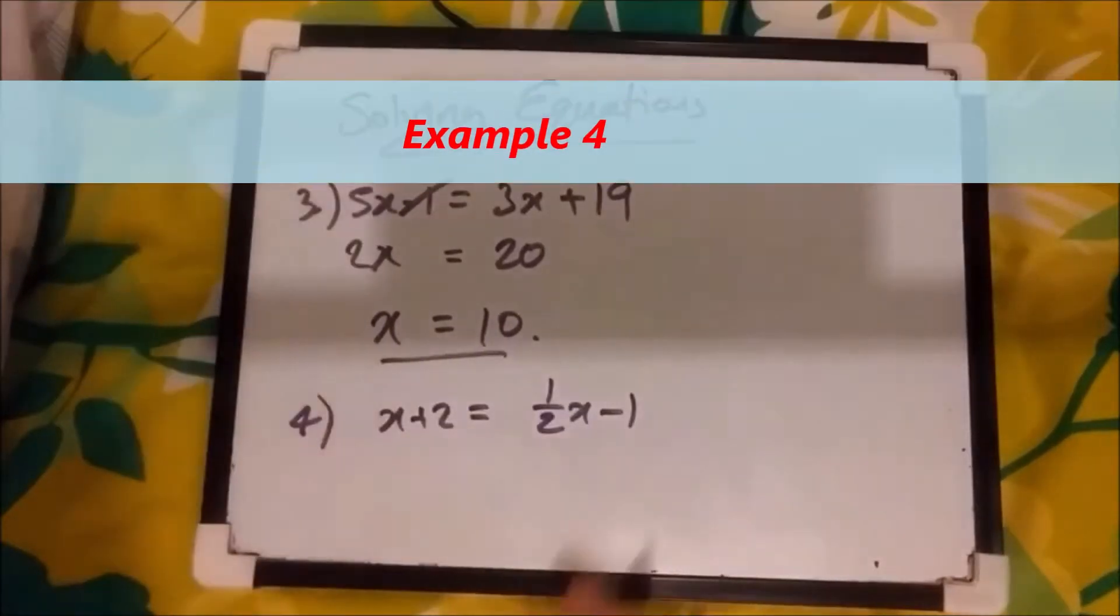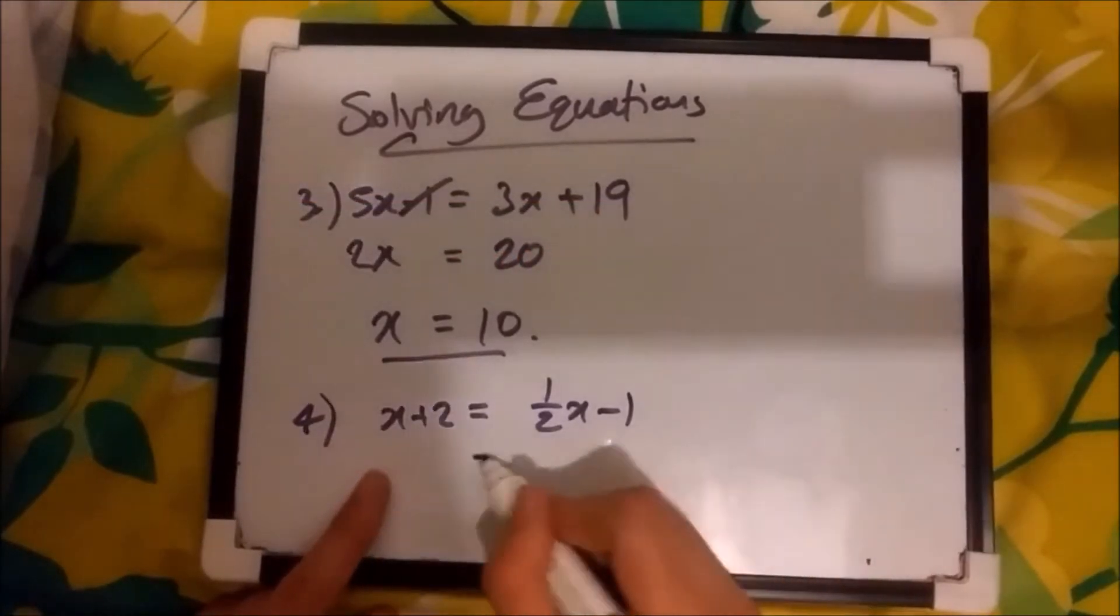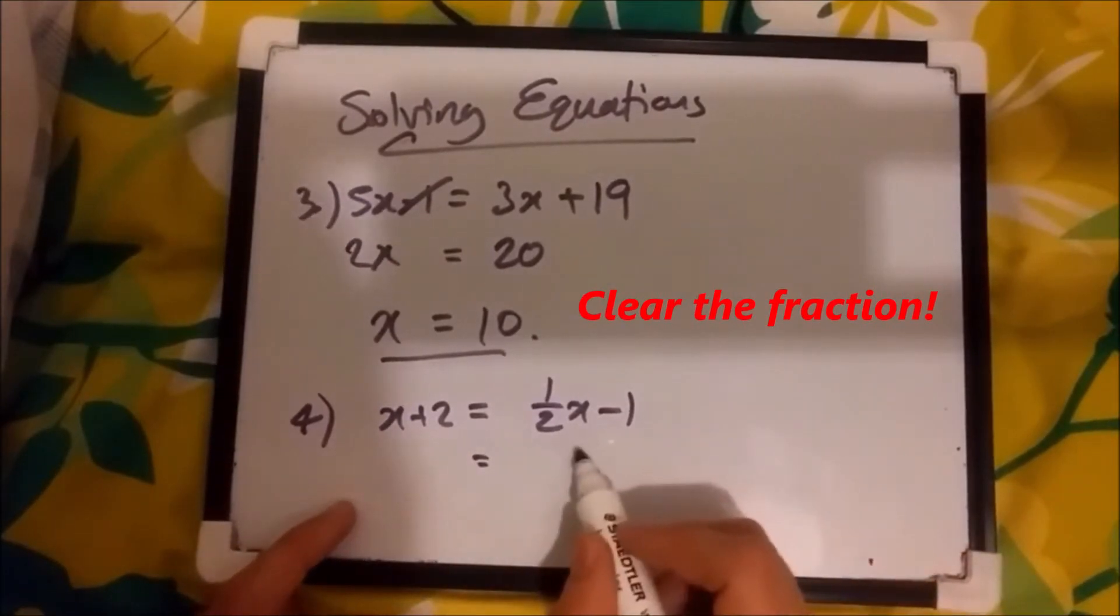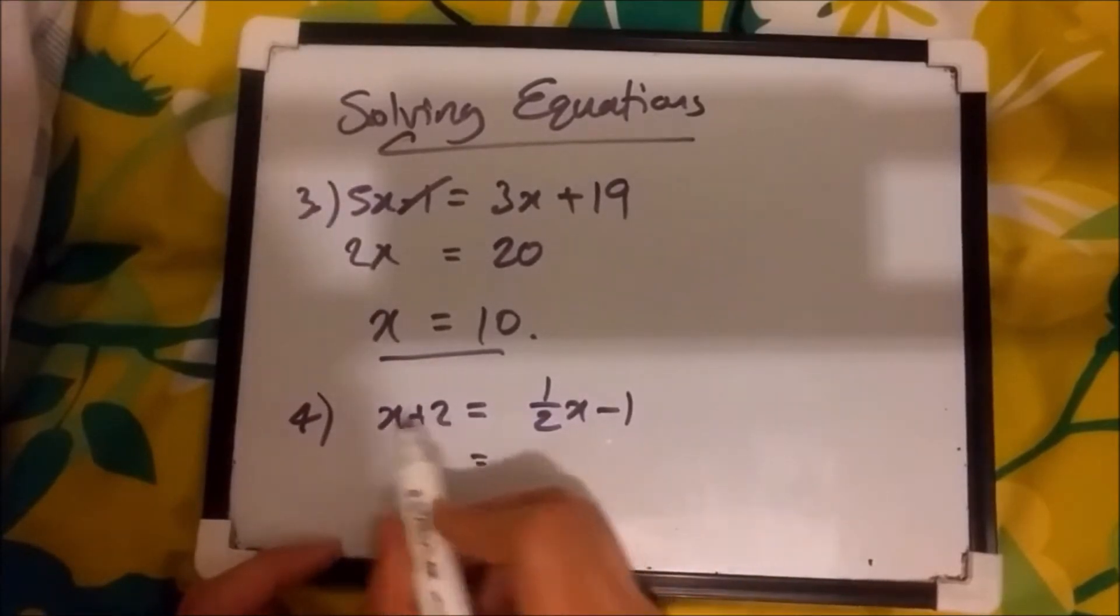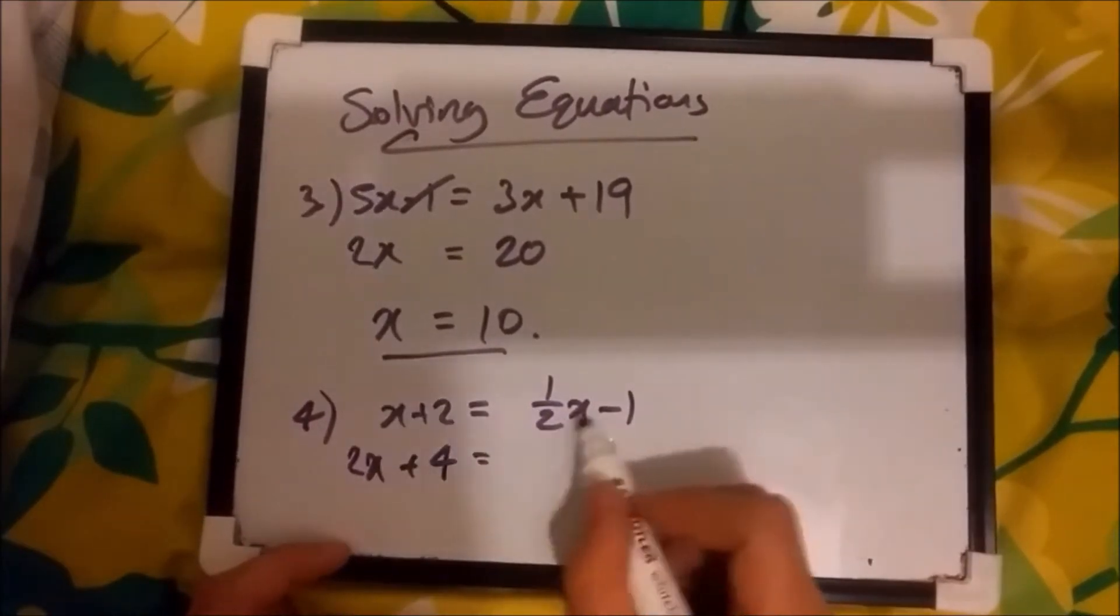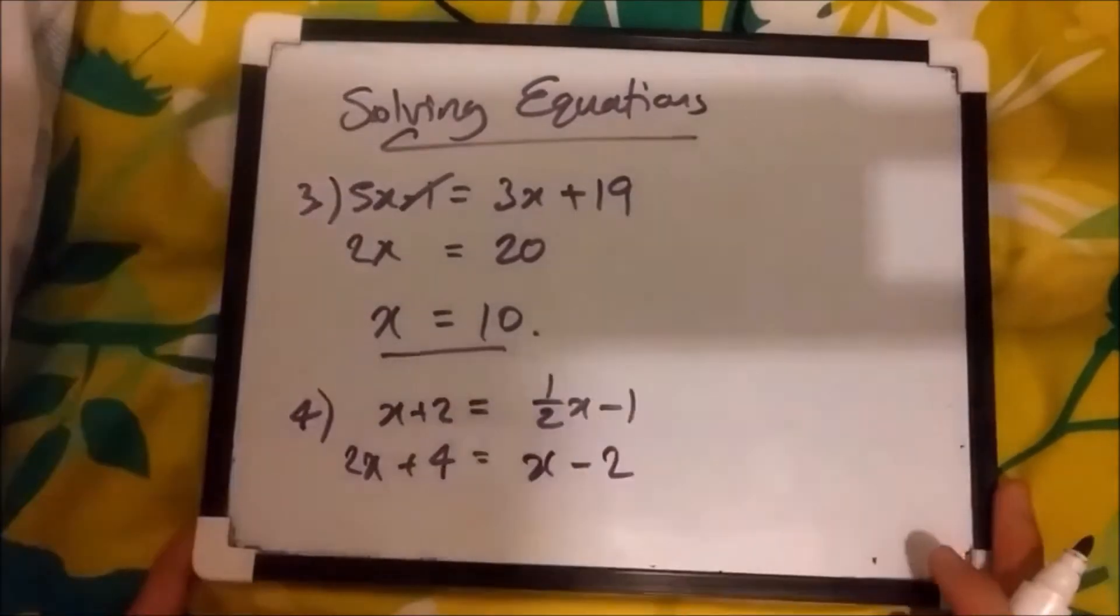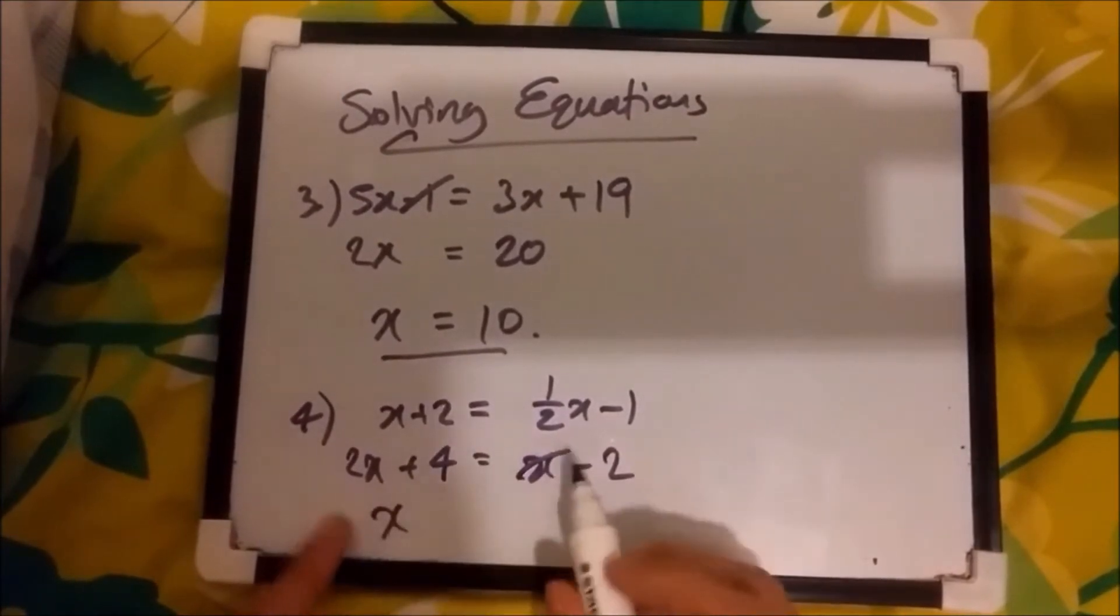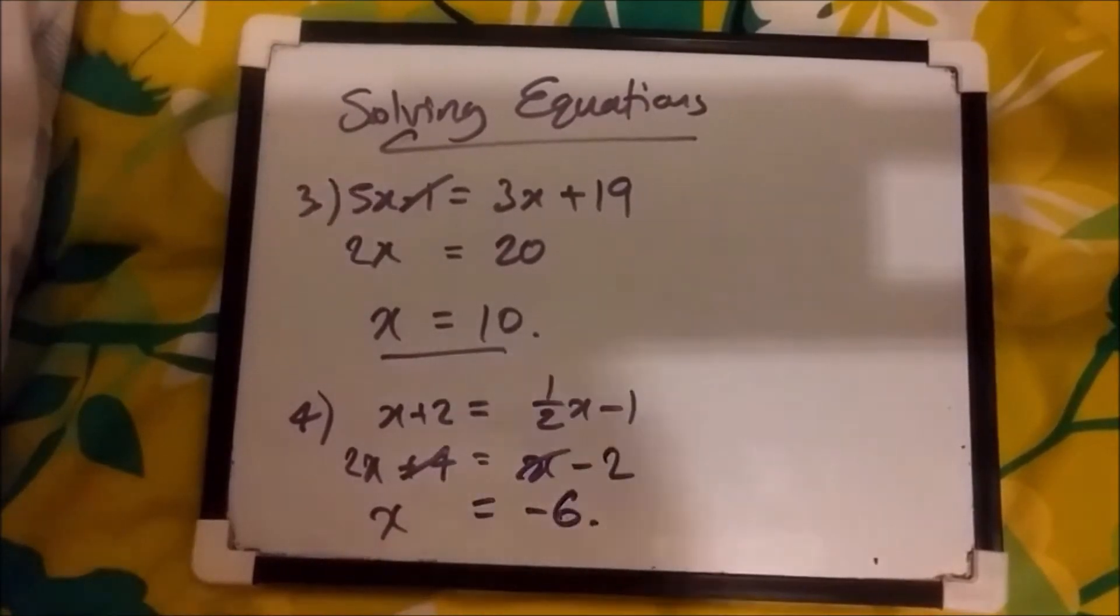Now, number 4. Here we have x plus 2 equals half x minus 1. Now, a nice little trick here is to firstly, when you see a fraction, it's always clear the fraction. Honestly, it helps a lot. So by clearing the fraction, because we've got 2 underneath, we want to essentially multiply everything by what's at the bottom. So in other words, multiply by 2. That'll make that half disappear. If we do that, we're going to get 2x plus 4 and then x minus 2. So everything's been doubled. Now, we can do what we did for the previous questions. So let's move the x to the left side, so it becomes 2x minus x. So that's basically 1x. And then if you move the plus 4 across, it becomes minus 4. So minus 2 minus 4 is minus 6. Cool.